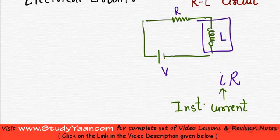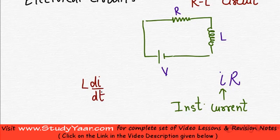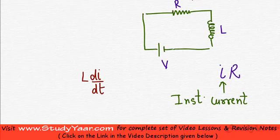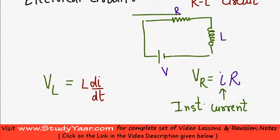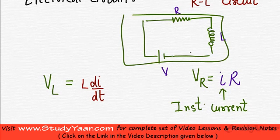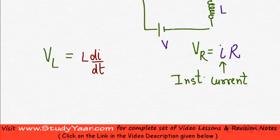Voltage across an inductor is equal to L di by dt, where i is the instantaneous current. So your voltage across inductor is this, your voltage across resistor is this.